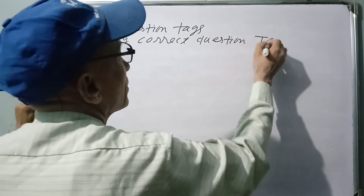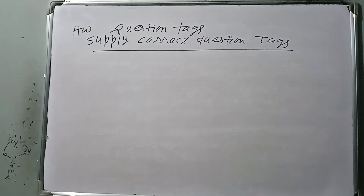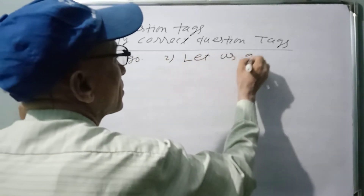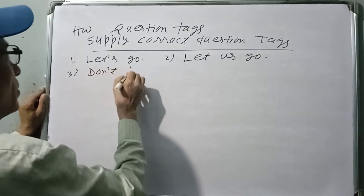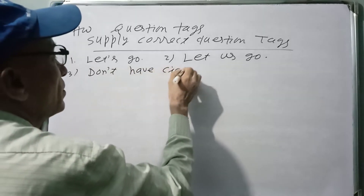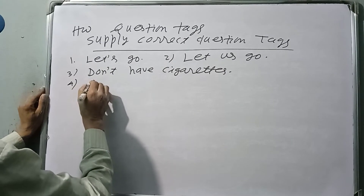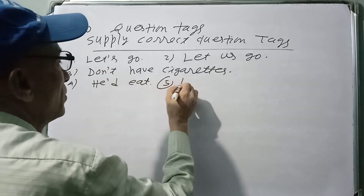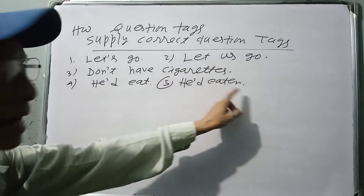At the end of any topic, you must get the correct tag. For example, 'Let's go' means 'let us go' — the tag is 'shall we.' 'Don't have cigarettes' — the tag uses 'will you.' For 'eat' — V1 form. 'Eaten' — would be V3. For 'would rather,' add V3. So 'would rather' takes the base verb or V3.